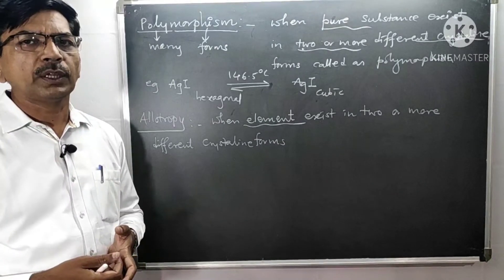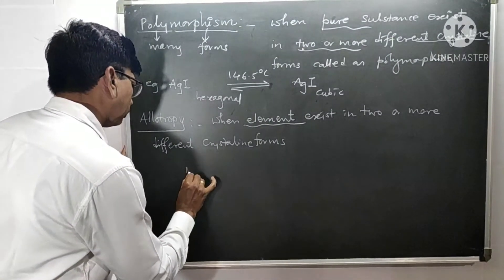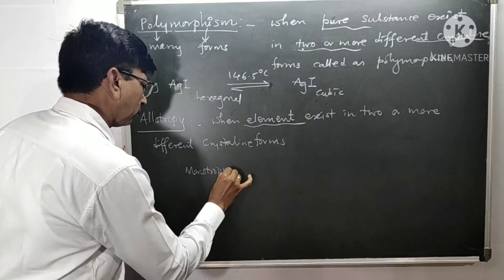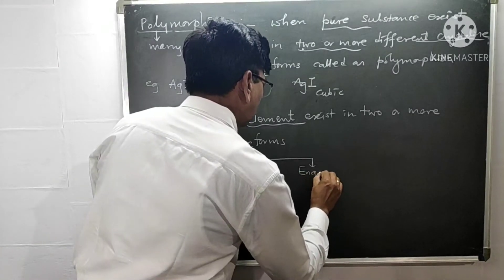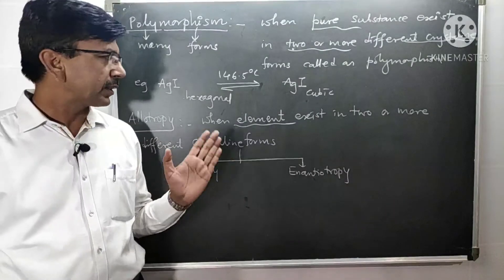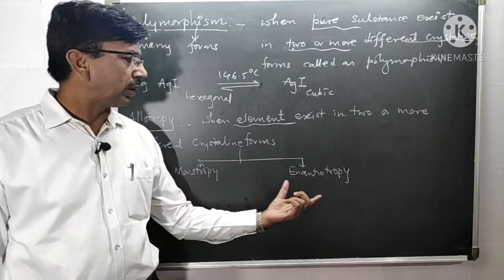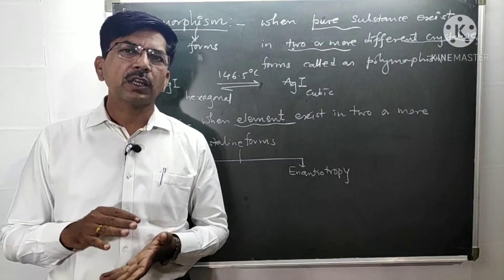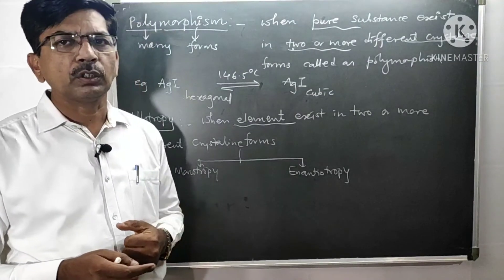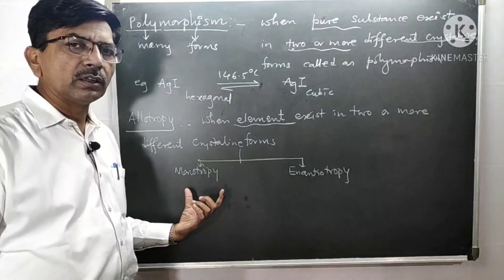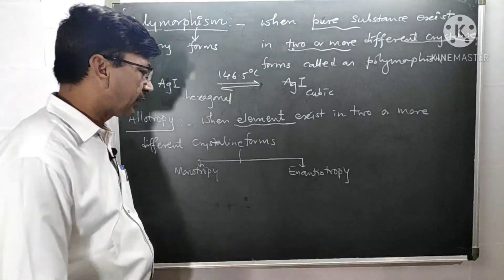There are two cases of allotropism: one is monotropy and the other is enantiotropy. In enantiotropy, one crystalline form gets converted to the other and can be converted back — that is, the crystalline forms are interconvertible at the transition temperature. In monotropy, the crystalline forms are not interconvertible — the conversion occurs in only one direction.